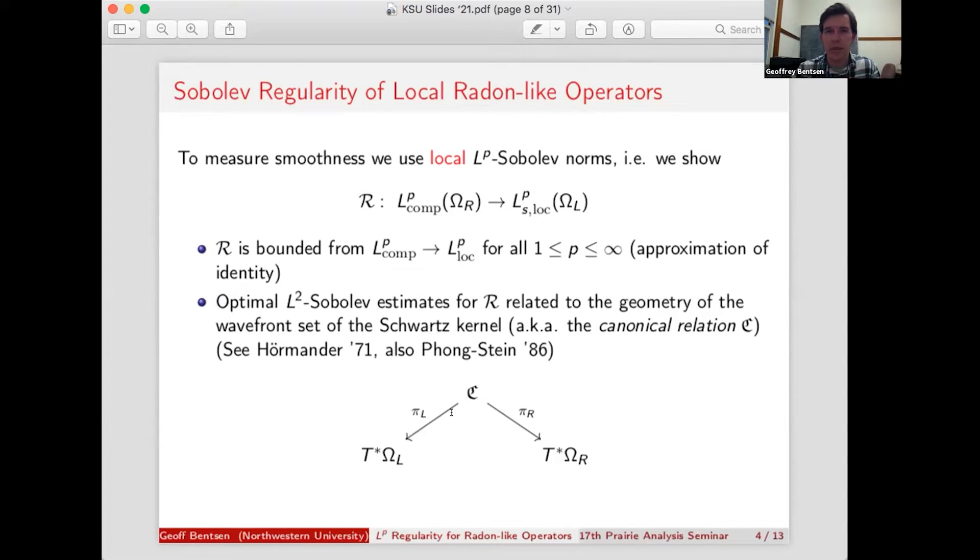But basically, you have this almost phase-space transformation between the phase-space of your input and the phase-space of your output. And the geometry of this wavefront set, what really matters are these projections, pi r and pi l, to see how the canonical relation sits inside of these two cotangent bundles.